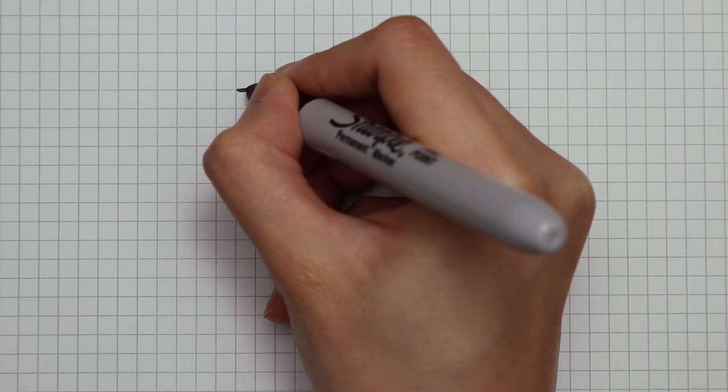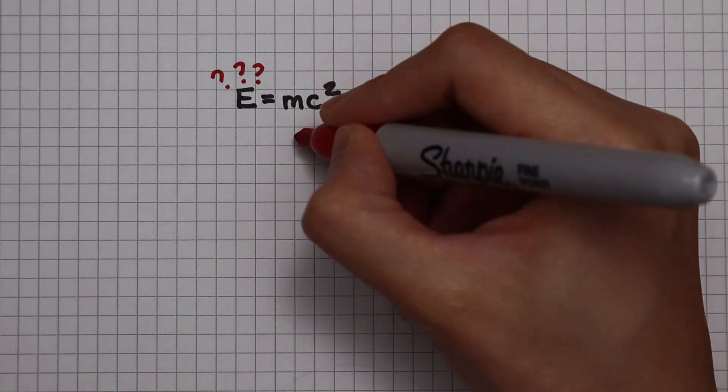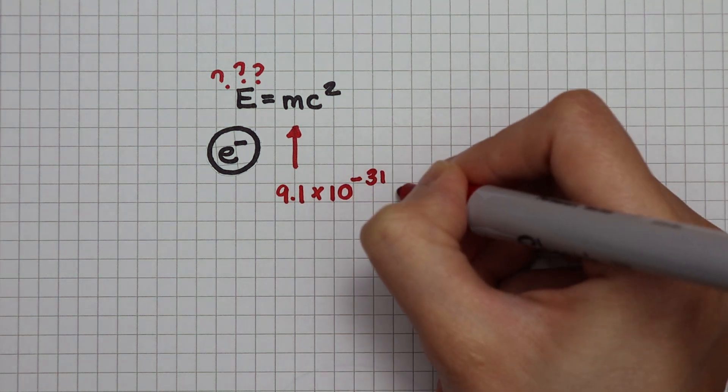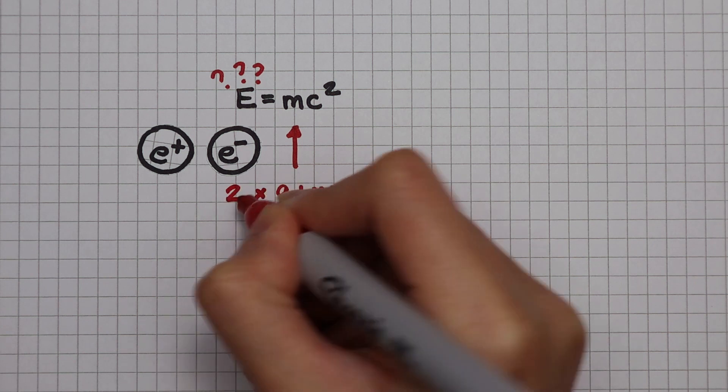How much energy does a photon need in order to create an electron-positron pair? The mass of an electron is 9.1 times 10 to the minus 31 kilograms. Since we have an electron and a positron, we need to multiply by 2.